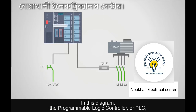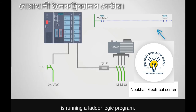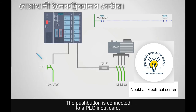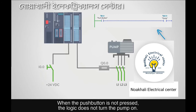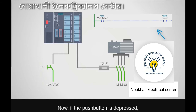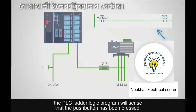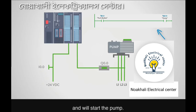In this diagram, the Programmable Logic Controller or PLC is running a ladder logic program. The pushbutton is connected to a PLC input card, and the logic program is written to sense the state of the pushbutton. When the pushbutton is not pressed, the logic does not turn the pump on. If the pushbutton is depressed, the PLC ladder logic program will sense that the pushbutton has been pressed and will start the pump.